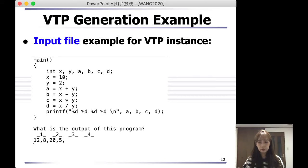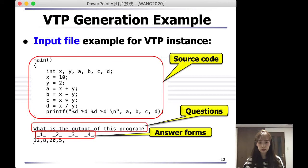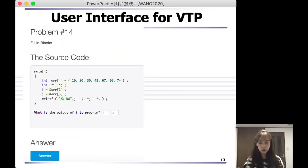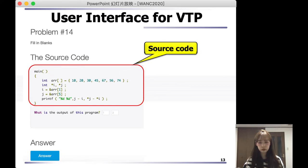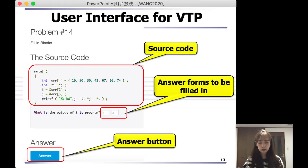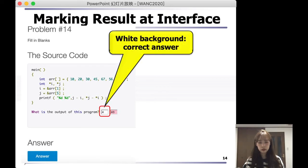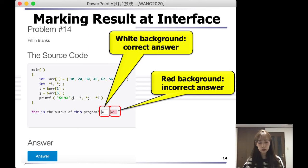This graph shows you an example of the generation of VTP. In an input file, a source code, a set of questions, answer forms, and correct answers must be prepared first. This graph shows you the user interface. Students should read the source code first and fill in the answer forms. Then students can click the answer button. After clicking the answer button, if their answer is correct, it will show a green background. But if the answer is incorrect, the background will turn red. Students can submit their answers many times until their answers are correct. The server will record submission times and answers.